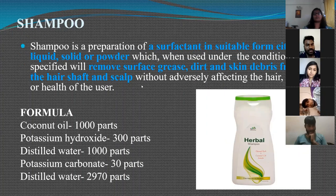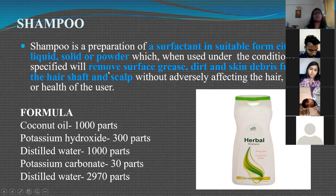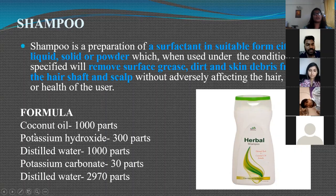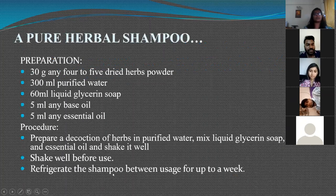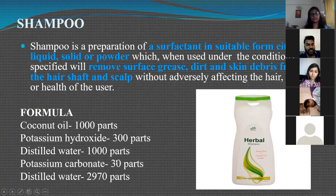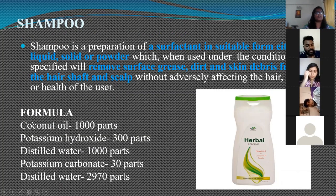Shampoos are surfactants used to remove surface grease, dirt, and skin debris from the hair shaft. A typical shampoo formula consists of 1000 parts coconut oil, 300 parts potassium hydroxide, distilled water, and potassium carbonate. Sodium or potassium salts of fatty acids form the soap base, making this kind of shampoo surfactant in nature.